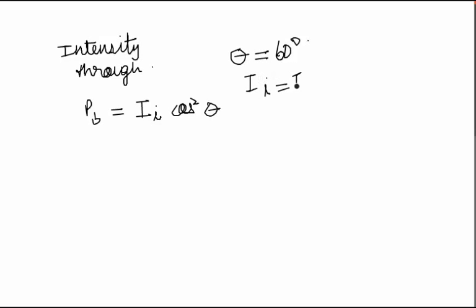Now theta is the angle between the two polaroids, so theta would be in this case 60 degrees, and intensity incident would be I0 by 2. So when we calculate this it will become I0 by 2 times cos square 60.